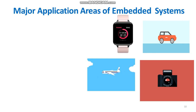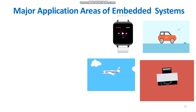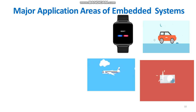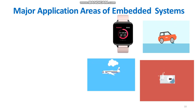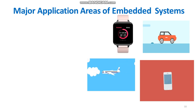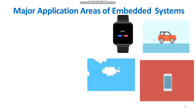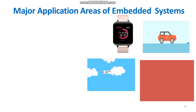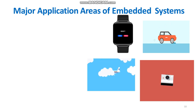So firstly, the major application areas of embedded systems. The application areas and the products in the embedded domain are countless. A few important domains and products are listed here.